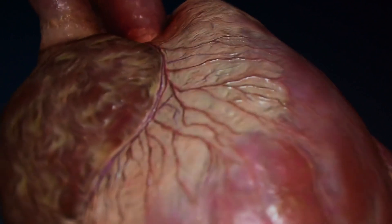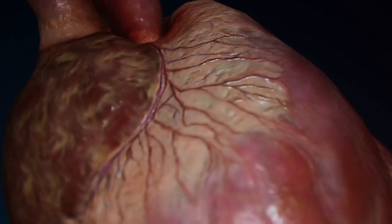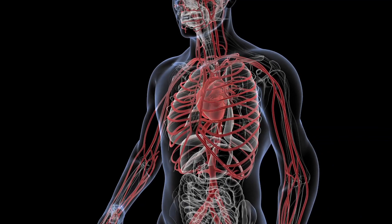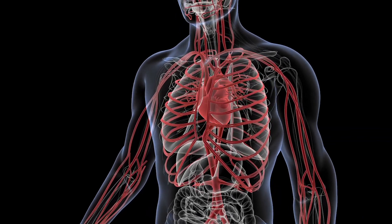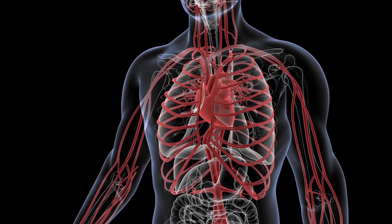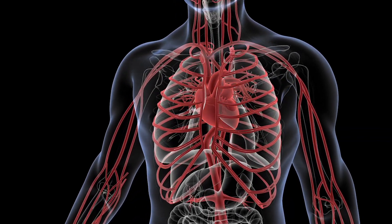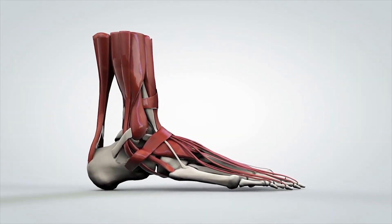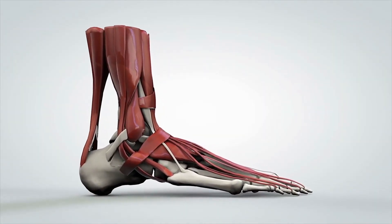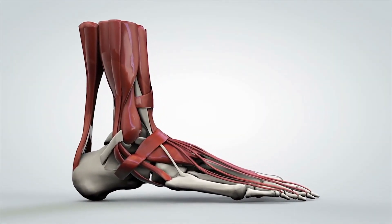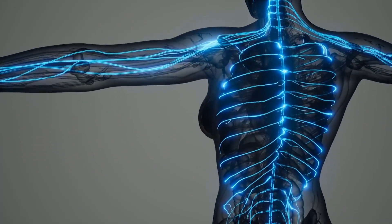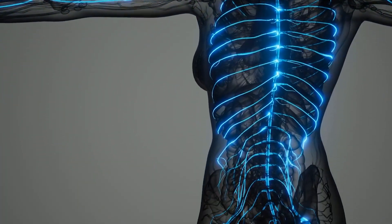Cardiac muscle is located in the heart. It's controlled by the sinoatrial node and its main function is to pump blood and oxygen around the body. Skeletal muscles are controlled by the somatic nervous system and work under conscious or voluntary control.